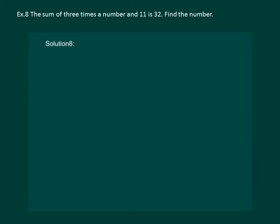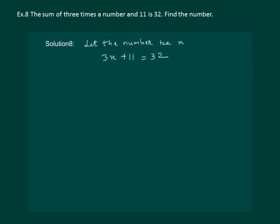Let us read the question: the sum of 3 times the number and 11 is 32. Find the number. To solve this question, let us start by assuming that the number is x. The sum of 3 times the number means 3x, and 3x plus 11 is equal to 32. So we have an equation from the condition. Now let us solve this equation.